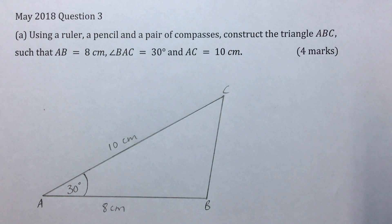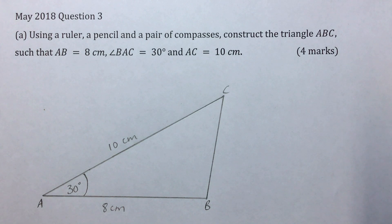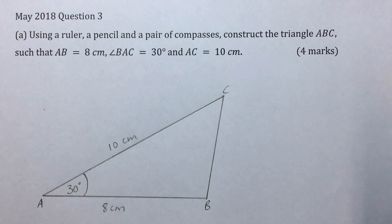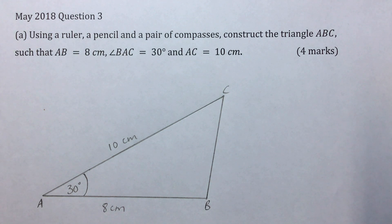In this video I'll be solving May 2018 question 3, part A. Using a ruler, a pencil, and a pair of compasses, construct the triangle ABC such that AB is equal to 8 cm, angle BAC is equal to 30 degrees, and AC is equal to 10 cm.